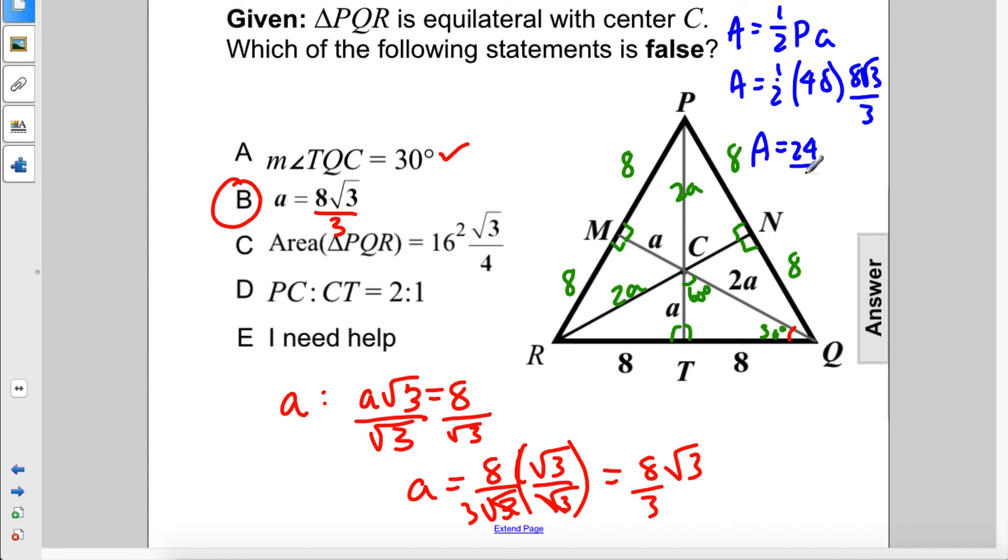And then we have over 3 times 8 times the square root of 3. This cancels out to 8. So 8 times 8 is 64 times the square root of 3. So is this equal to 64 times the square root of 3? 16 squared is 256 divided by 4 is 64. So this is true.